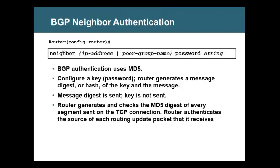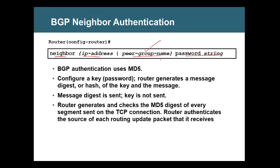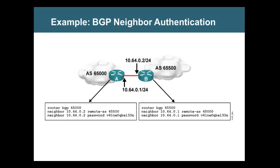Whenever the autonomous system is misconfigured, you will see a notification error message. If you see a notification message, go and check the autonomous system number — instead of 20, you might have given 200. Now, authentication in BGP is very simple. On both sides, you need to put the same password with the same neighbor IP address. If you have the same password for many neighbors, put it under the peer group. BGP will do hashing because it uses the MD5 algorithm. The configuration is very straightforward — no need of keychain or anything like that, just put the password directly.